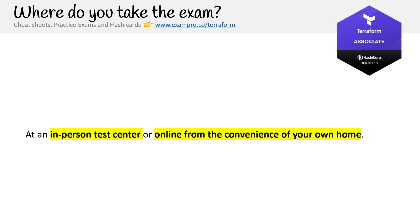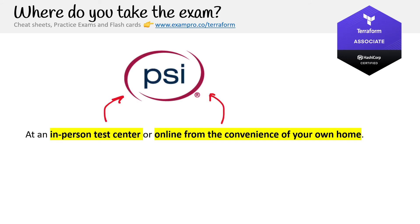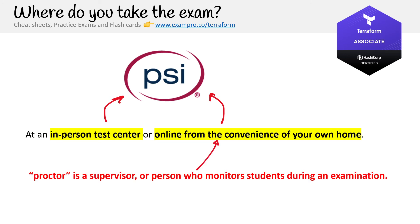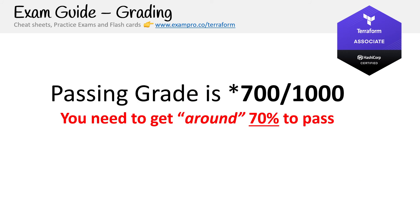Where do you take the exam? You can take it at an in-person test center or online from the convenience of your own home, and it's only with one testing provider — PSI — which is a network of test centers around the world. This is a proctored experience, so there is a supervisor who monitors students during the examination. In terms of grading, you need to get around 70% to pass, though it likely uses scaled scoring, so aim for 75% to be safe.